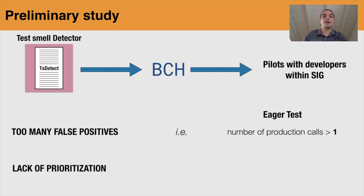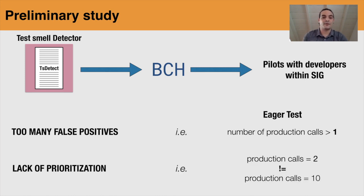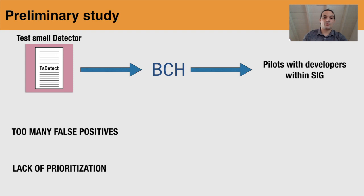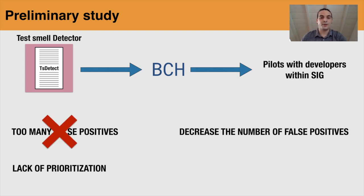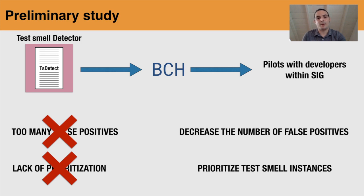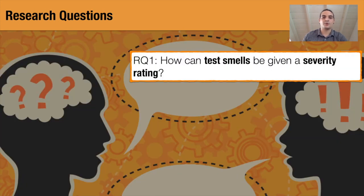The other reason is lack of prioritization. In the case of an eager test instance, having two production calls is very different from having 10, 20, or 50. Hence, before going to production, we need to solve these two issues: we need to decrease the number of false positives reported by the detector, and we need to prioritize the most problematic test smell instances so that developers can focus on them first. To this aim, we designed a study structured into two research questions.